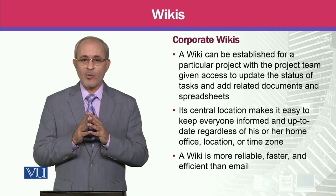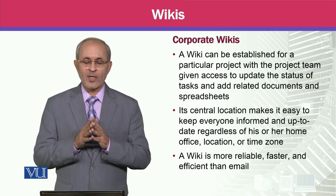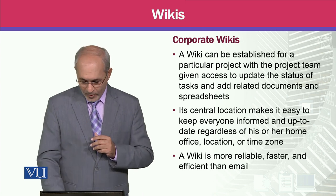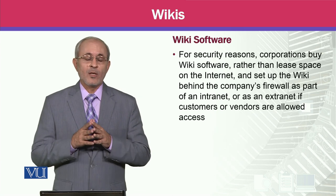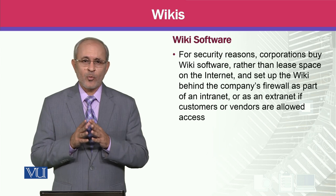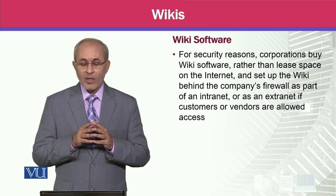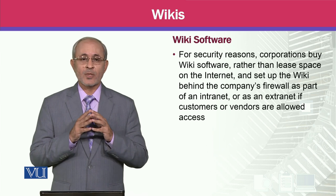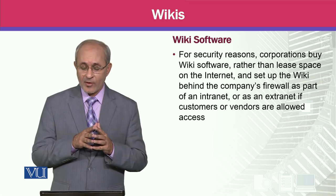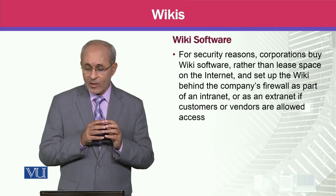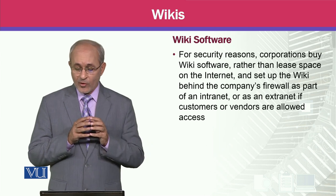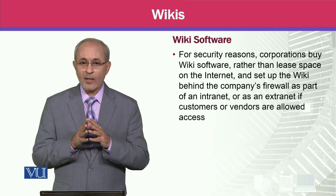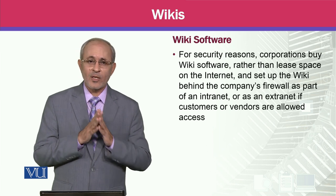Wiki is more reliable, faster, and efficient than email. Email کے نسبت یہ زیادہ reliable، efficient، اور faster ہے۔ Wikis کے ذریعے ایک organization project کو manage کر سکتی ہے۔ Wiki software کے بارے میں بات کریں تو organizations اس software کو security reasons کی وجہ سے purchase کرتی ہیں۔ Corporations buy wiki software rather than lease space on the internet.